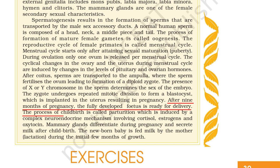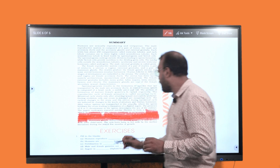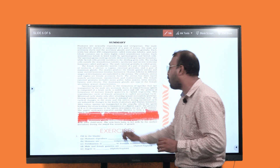Those lines should be read. The fully developed fetus is ready for delivery. Right? The process of childbirth is called parturition which is induced by a complex neuroendocrine mechanism involving cortisol, estrogen, and oxytocin. So remember cortisol, estrogen, and oxytocin - all three are involved in the mechanisms which involve a complex neuroendocrine mechanism. Right?